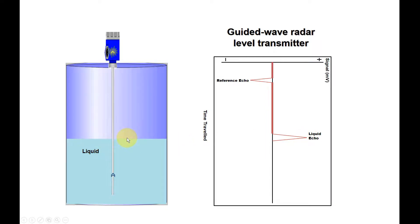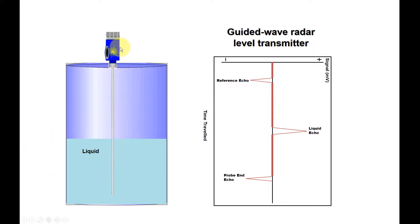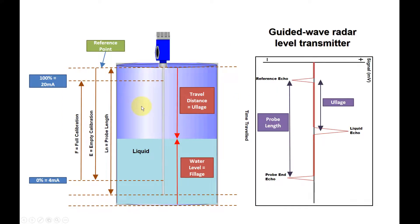Then this remaining signal will continue to travel all the way back to the level transmitter and be detected by the level transmitter electronic board. You can see the echo is formed here — this is called the probe end echo. This is the measurement for the level transmitter.